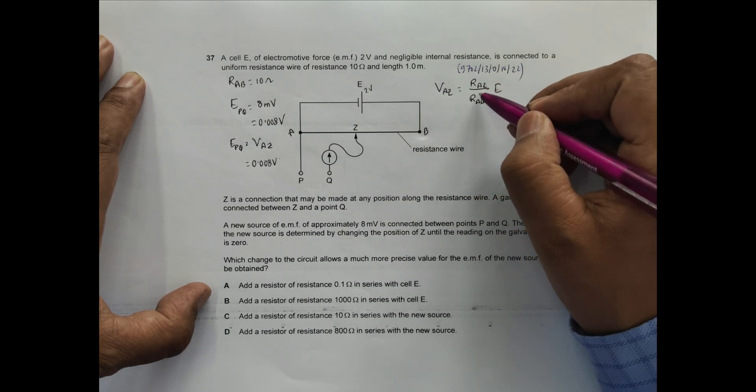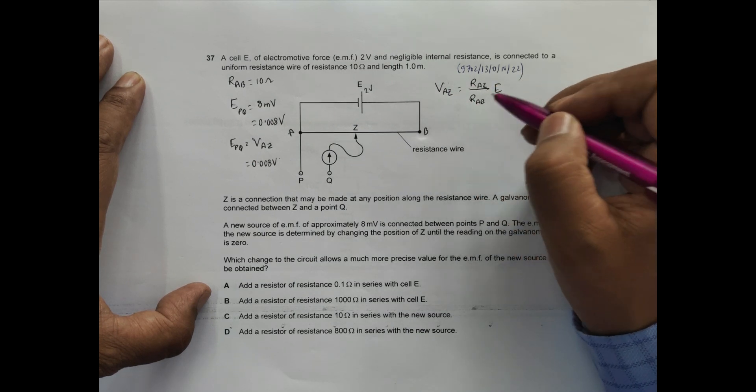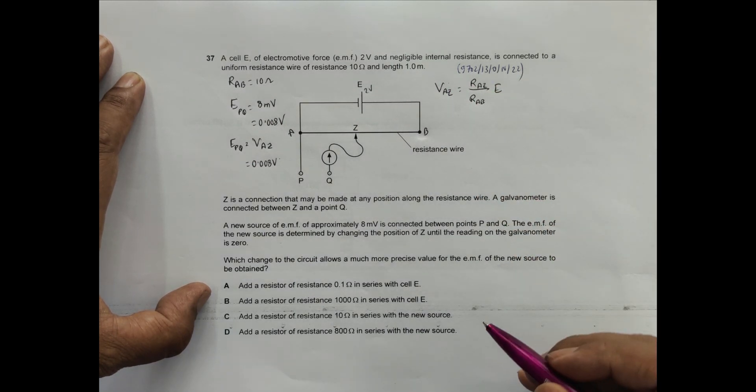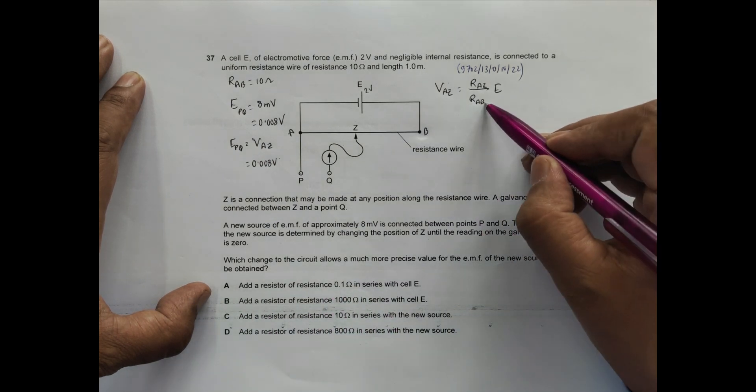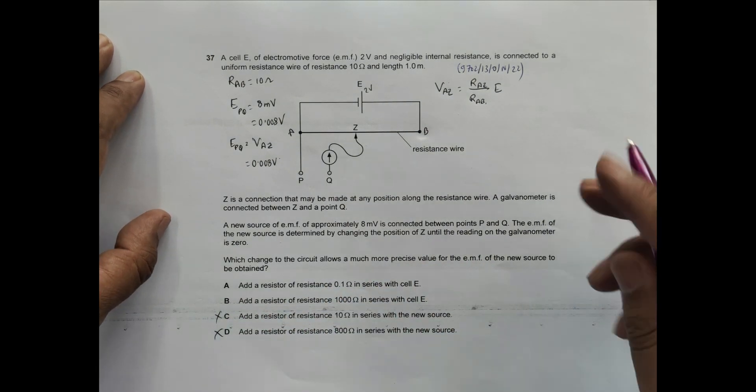Increasing precision means that delta VAZ should be less. To make it less, I must increase the denominator. That's why I should add something in series with the wire - the options adding resistance in series qualify.